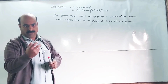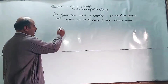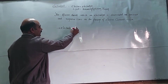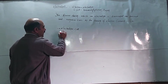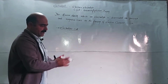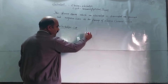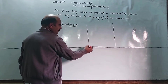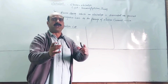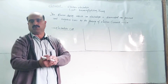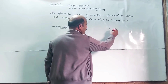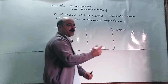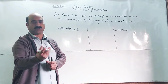The apparatus used to carry out electrolysis is called an electrolytic cell. The electrolytic cell consists of a container, which can be made of wood or other materials.